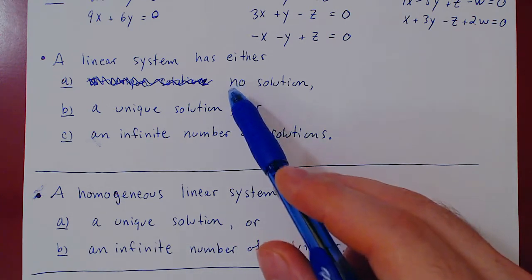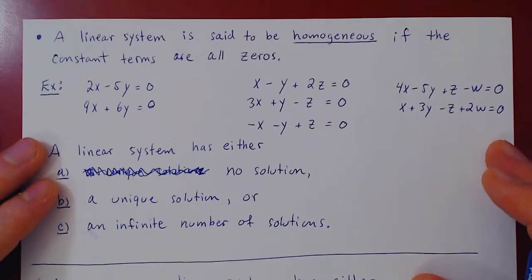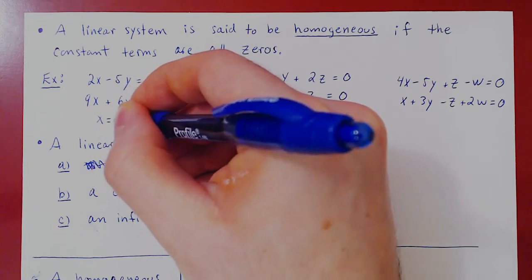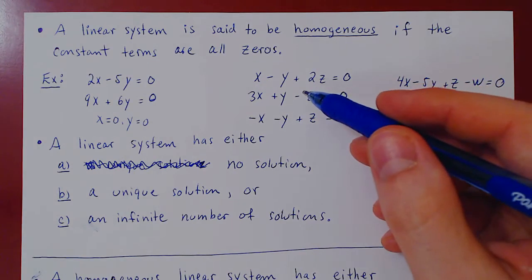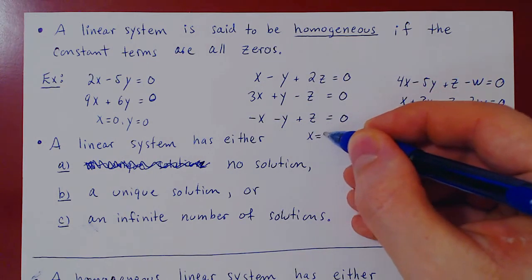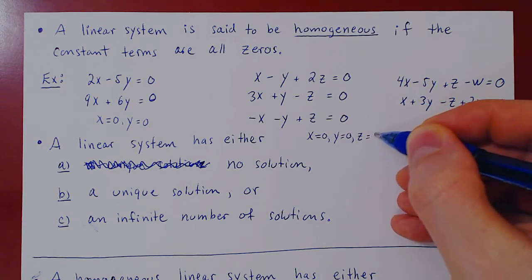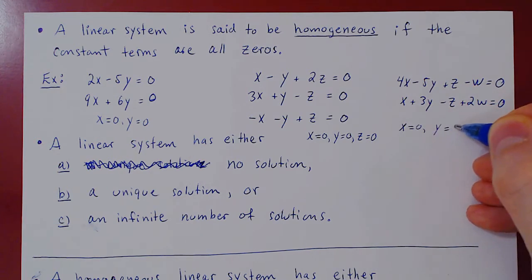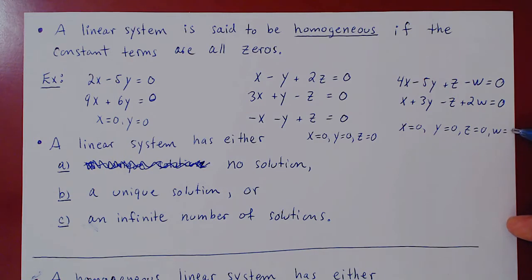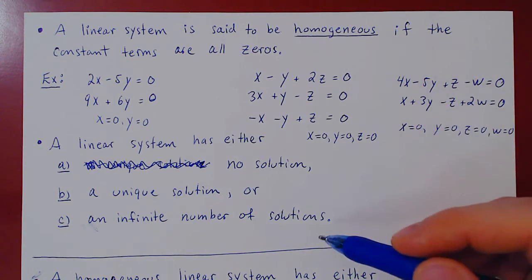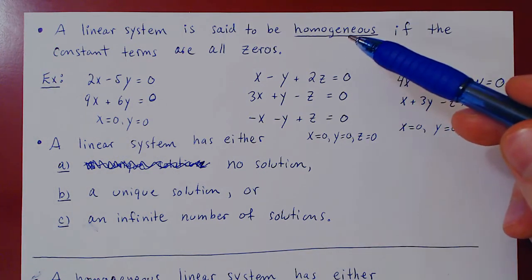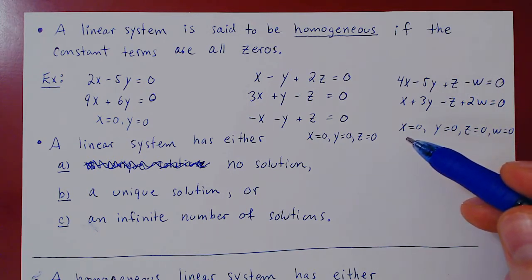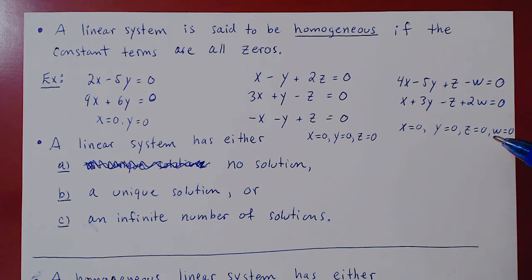Let's see why a homogeneous system cannot have no solution. If you set x equal to zero and y equal to zero, you have a solution. Similarly, if you set x, y, and z all equal to zero, you also have a solution. And if you set x, y, z, and w all equal to zero, that is also a solution. This works for any homogeneous system — no matter what the coefficients are, if you multiply them by zero you get zero. So setting all the variables equal to zero will always yield a solution to a homogeneous linear system.